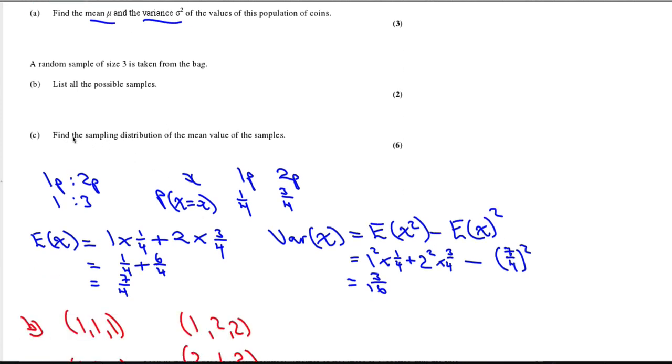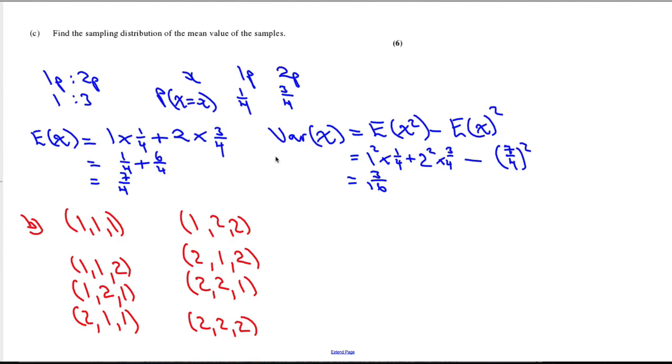The next part requires us to find the sampling distribution of the mean of the samples. First of all, we have to consider what the mean is for each collection of samples. If we look at this first one, the mean is obviously 1. The mean of this sample however is 1 plus 1 plus 2 divided by 3, which gives us 4 over 3. These samples will all have a mean of 5 over 3. And finally, this one will have a mean of 2. So we've got each sample written down, the list of all samples, and then the mean for each of those samples.